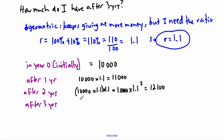And then after three years, well, then I have to do it one more time. So just to save some space here, it'll be times 1.1 cubed. In this case, then, I will have 13,310. So I could say, therefore, I will have $13,310 after three years.